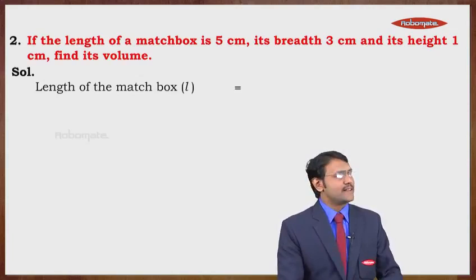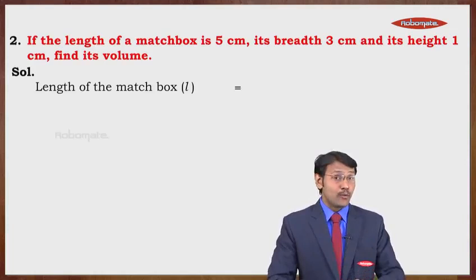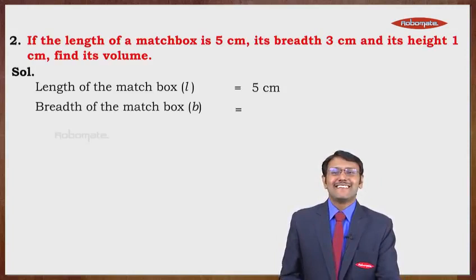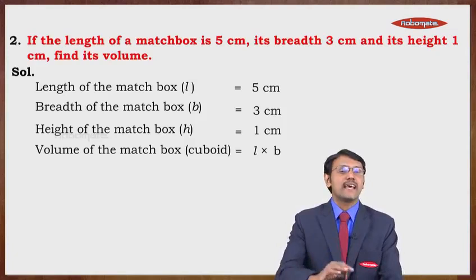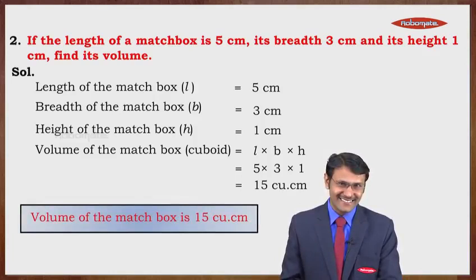Some examples based on the cuboid. If the length of a matchbox is 5 centimeters, breadth is 3 centimeters, and height is 1 centimeter, then find its volume. A matchbox has the shape of a cuboid, so volume = L × B × H = 5 × 3 × 1 = 15 cubic centimeters.